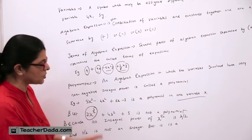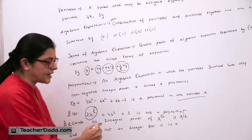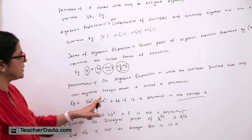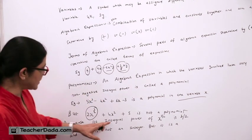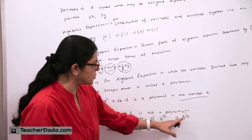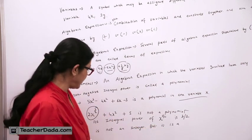If I take 3 upon 2, it will come in a decimal or a fraction. So we cannot take the decimal and a fraction. It has to be a non-negative integral power. The integral power of X raised to 3 upon 2 is 3 upon 2, and 3 upon 2 is not an integer but it is a fraction.